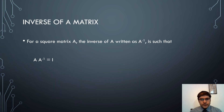The inverse of a matrix, when multiplied by the matrix itself, gives the corresponding identity matrix. For a square matrix A, the inverse written as A to the power minus 1 satisfies A * A⁻¹ = I, where I is the identity matrix for A.